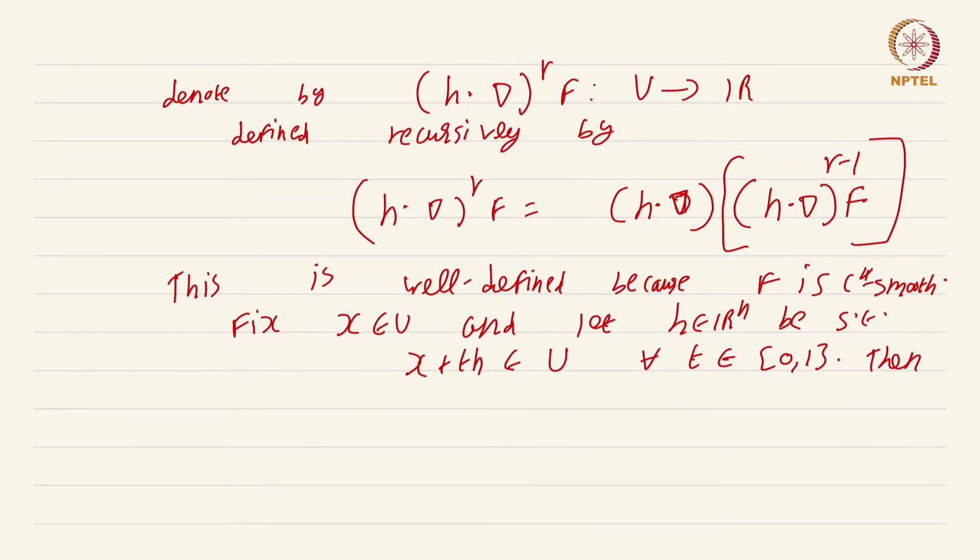Then d^r by dt^r of f of x plus th, taking the rth derivative with respect to t, is nothing but doing h dot grad power r of f of x plus th. You can convert the derivative on t to taking derivatives with respect to this new operator h dot grad.